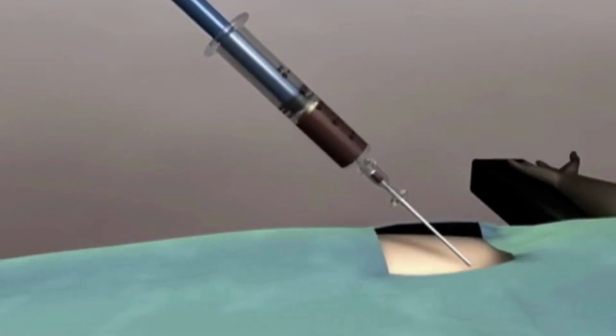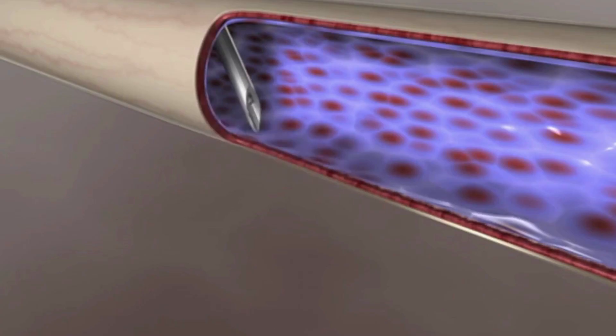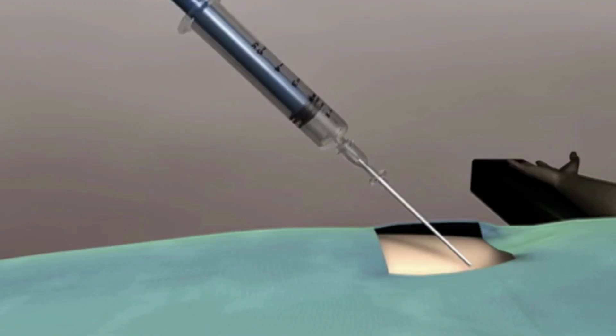If there is good flow on initial aspiration and the wire does not pass through the needle, remove the wire and reconfirm flow into the syringe.